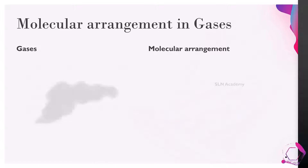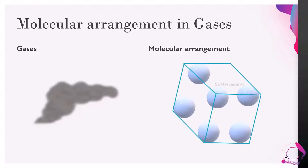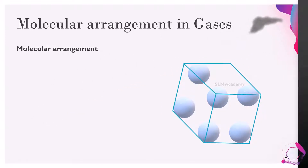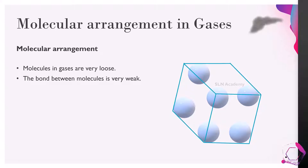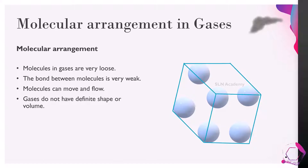Why do gases have no shape at all? Observe the molecular arrangement in gases. The molecules in gases are very loosely packed. The bond between these molecules is very weak, and there is a lot of space between them. This allows the molecules to move and flow freely. A gas can occupy any space or volume by itself, and hence gases do not have a definite shape or volume.